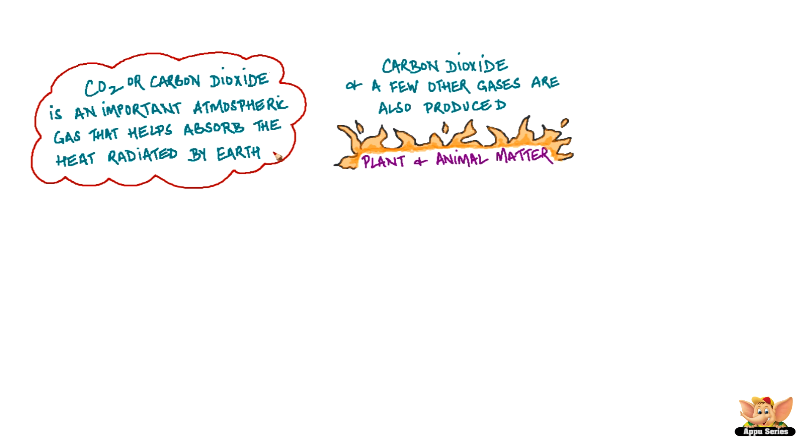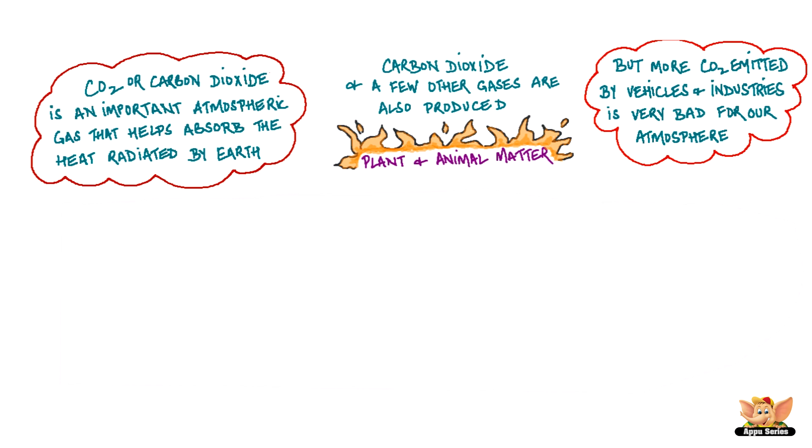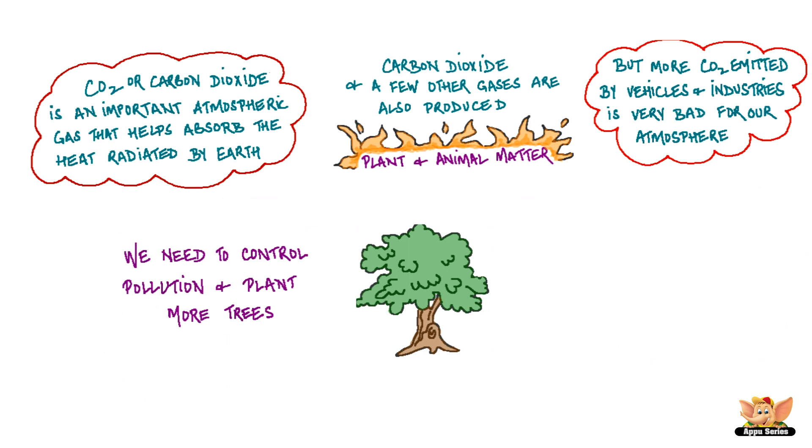Carbon dioxide is an important atmospheric gas that helps to absorb the heat irradiated by earth. But more carbon dioxide emitted by vehicles and industries is very bad for our atmosphere. We need to control pollution and plant more trees to maintain the carbon dioxide levels in the atmospheric air.